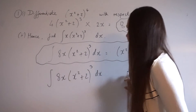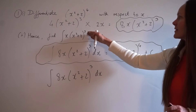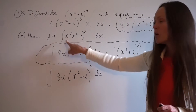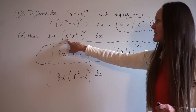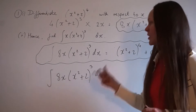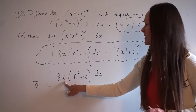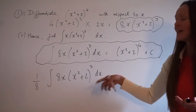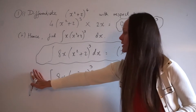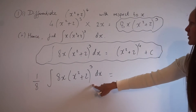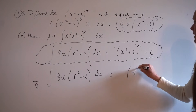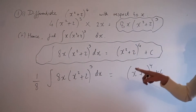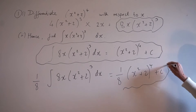We need to tweak the known integral so it matches the one we need to work out. Ask yourself: what can you do to 8x to get 1x? You divide by 8. So we divide this integral by 8 — which is the same as multiplying by one eighth — and when simplified it looks identical to the integral we need. We write down the known integral result, then multiply the answer by one eighth. That gives the final answer for part 2.